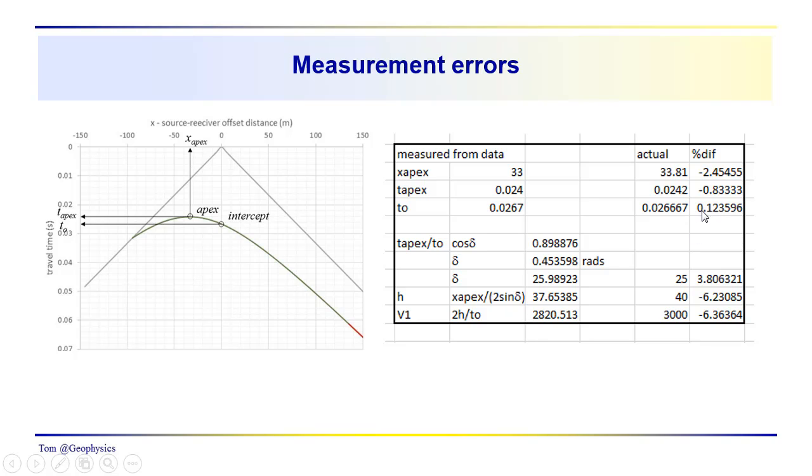The cosine of delta, delta that is obtained from the analysis is 25.98. It was actually 25. That was the dip used to generate the model. The thickness of the layer was 40 meters. I came up with 37.65, a velocity of 2,820, actual velocity 3,000. And then you can see the errors here, 3.8%, 6.2%, 6.4% error.